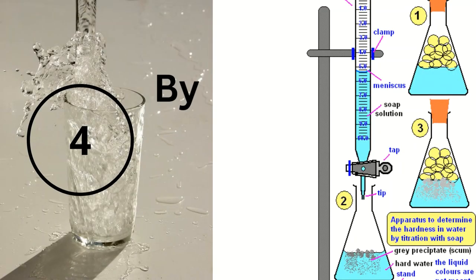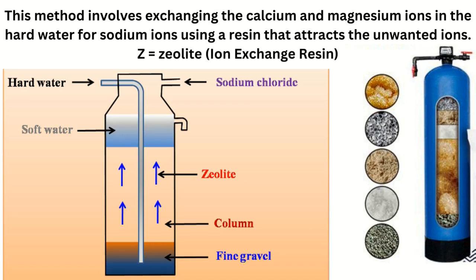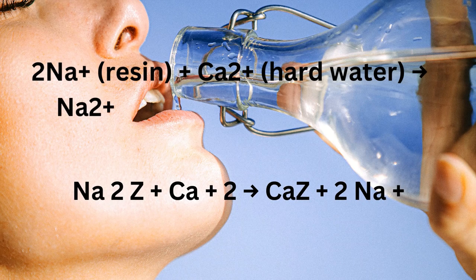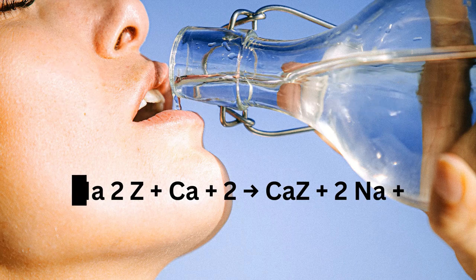Method 4: By ion exchange method. This method involves exchanging the calcium and magnesium ions in the hard water for sodium ions, using a resin that attracts the unwanted ions. Z equals zeolite — the ion exchange resin. 2Na(resin), also known as sodium zeolite, reacts with Ca2+ from hard water to give Na2 ions and Ca(resin), or calcium zeolite.